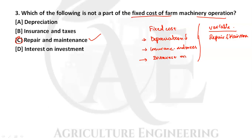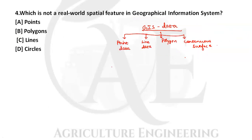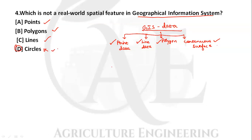Next question: which is not a real-world spatial feature in a Geographical Information System? In GIS there are four types of data: point data, line data, polygon data, and continuous surface. Circles is not a real-world spatial feature, so option D is the correct answer.